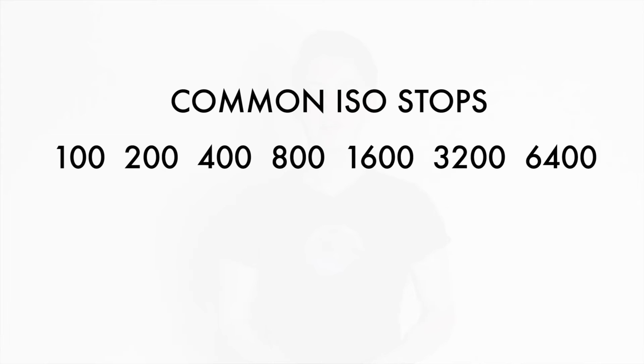Most digital cameras have a lowest sensitivity of 100, but you can get film as low as ISO 5. On the higher end of the spectrum, cameras can get up to 25,000, but for this video, we're going to be looking at the range from 100 to 6400. The stops in this range are 100, 200, 400, 800, 1600, 3200, and 6400.